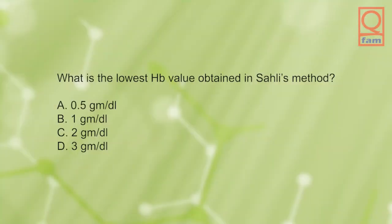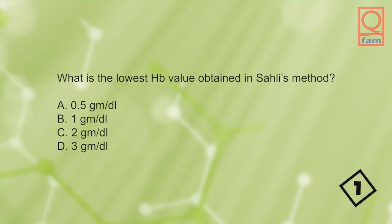What is the lowest hemoglobin value obtained in Sahli's method? A) 0.5 grams per deciliter, B) 1 gram per deciliter, C) 2 grams per deciliter, D) 3 grams per deciliter. The answer is C, 2 grams per deciliter.